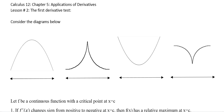Hello Calculus 12 students, welcome to chapter 5 lesson number 2. In this lesson we're going to be talking about something called the first derivative test. From our previous lessons we've been talking about critical numbers and critical points, and although it's not hard to find these, sometimes we don't know if those critical points are maximum or minimum points. One way to figure out whether we have a maximum or minimum value is by using the first derivative test.